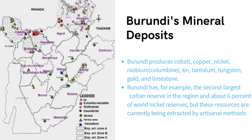Looking at the map of Burundi, we can tell where the mineral deposits are located. The key at the bottom tells us — the green color represents nickel. We can see nickel deposits spread across a large area, indicating that nickel is found in quite large deposits in Burundi.